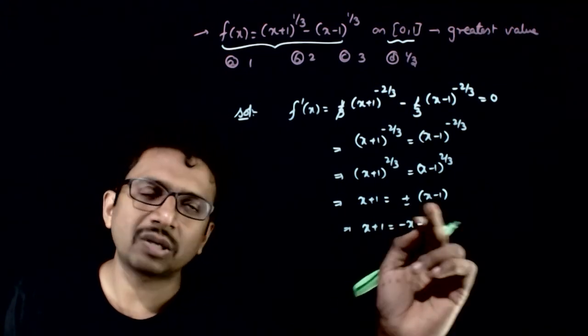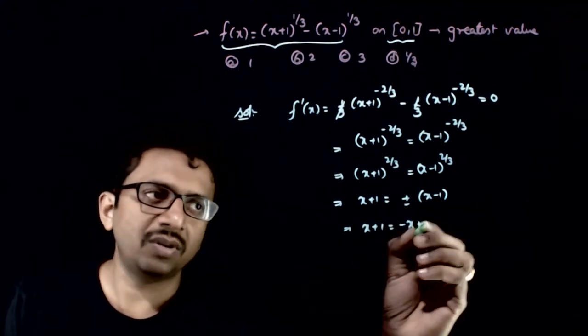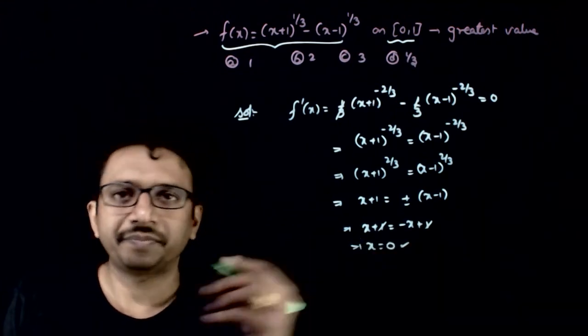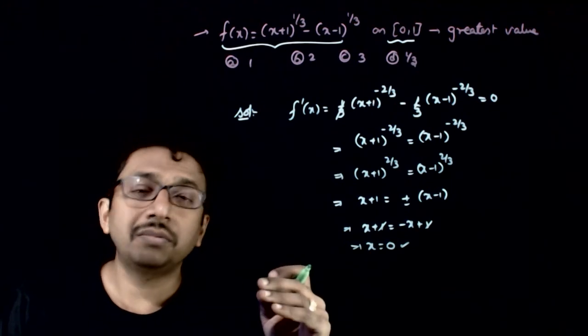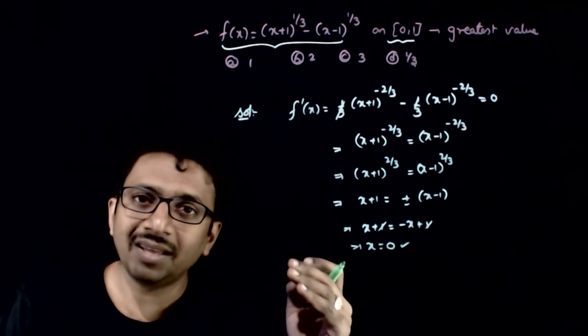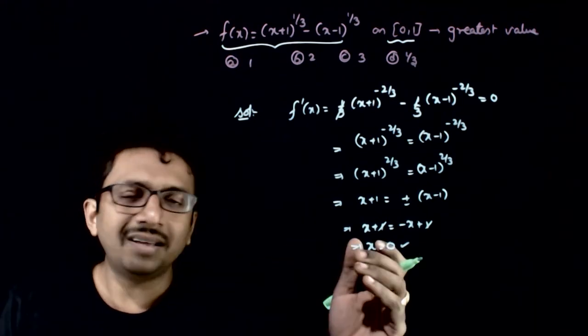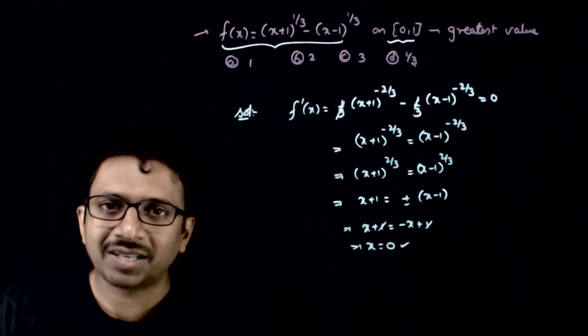x plus 1 is equal to minus of x minus 1, that is minus x plus 1. So getting cancelled, this implies x is equal to 0. So at x is equal to 0, you can have a minima or maxima. And this is the only local minima or maxima for this function.